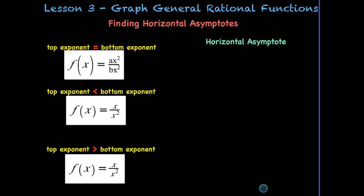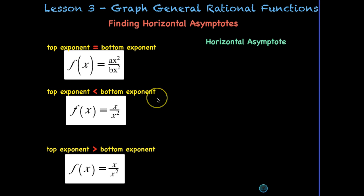Horizontal asymptotes, however, are going to change. We have three rules. If you have these in your notes it'll be really easy to find the horizontal asymptotes. They all have to do with our exponents, which are just the degree of the polynomial.